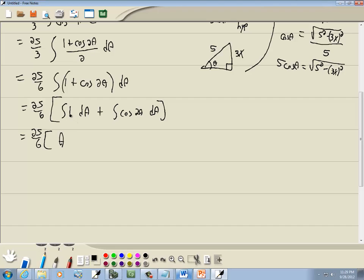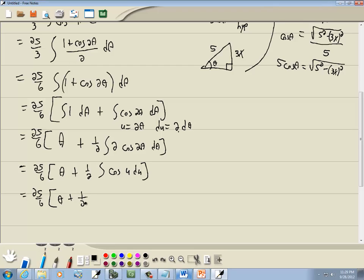Now this would be theta, the integral of 1. This one here I have to do the substitution. We let u equal 2 theta, du would be 2 d theta. So I need a 2 inside, so I'll offset with the 1 half out in front. So we got 25 over 6 theta plus 1 half, and then this becomes cosine u du. So we got 25 over 6 theta plus 1 half. The integral of cosine is sine, so we got sine u, plus c.